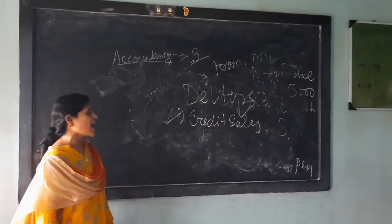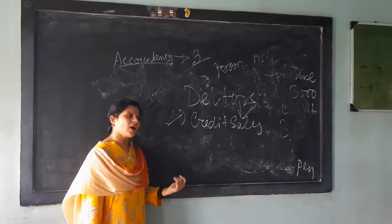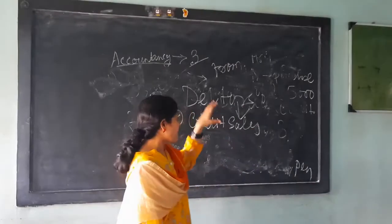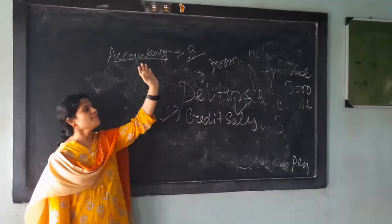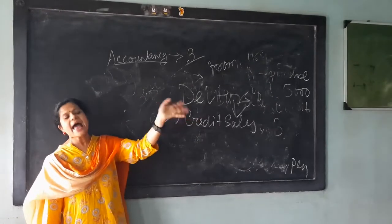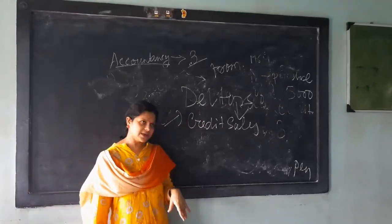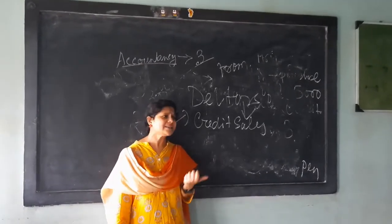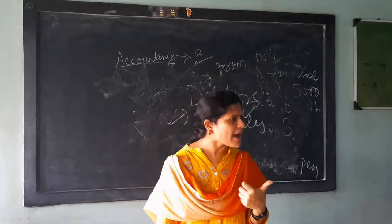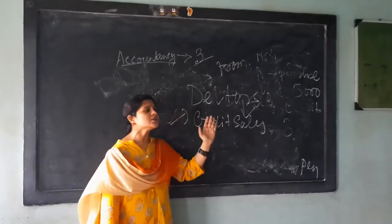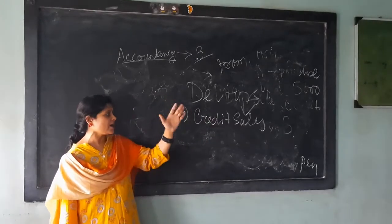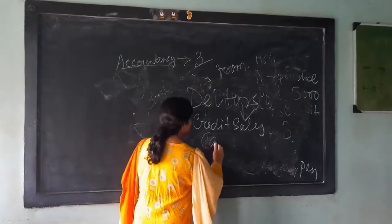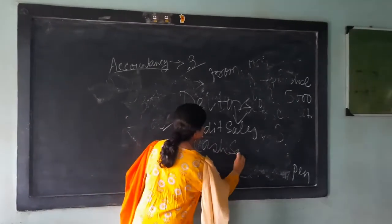But if a business concern has more and more debtors, then what is happening? It is not at all the good side of the business because the money has to be realized. We are not getting the money and thus, I am selling the product on credit. And then there will be risk, there will be uncertainty, then after some time I will not get back the money. Our business unit or our enterprise unit has to make a balance between credit sales and cash sales.